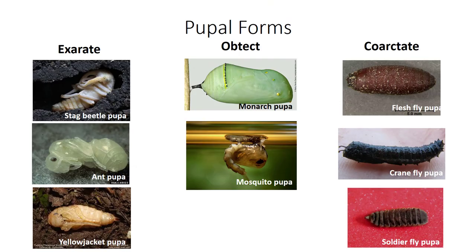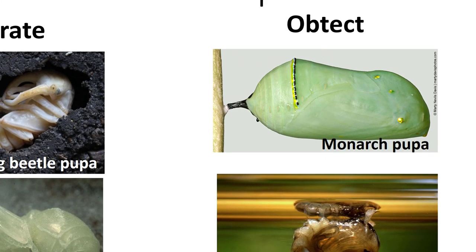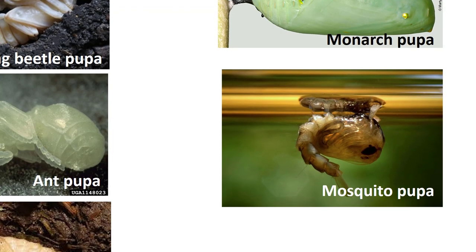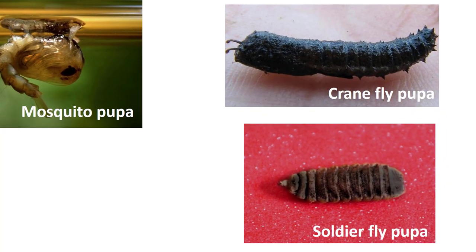There are also different types of pupal forms. Most pupae are exarate, where their appendages are free from their body and easily visible, as you can see in this stag beetle, ant, and yellow jacket pupae. Obtect pupae have their appendages cemented to the body and the cuticle is often heavily sclerotized, as seen in this monarch butterfly and mosquito pupae. Coarctate pupae are surrounded by the hardened skin of the last larval instar—usually dark brown and cylindrical, closely resembling a rodent dropping. The hardened larval skin is termed a puparium and occurs in certain families of flies, such as this flesh fly, crane fly, and soldier fly pupae.